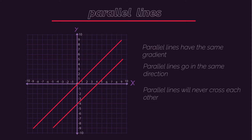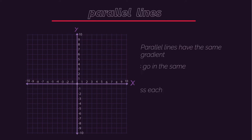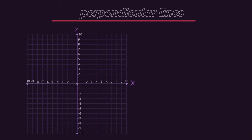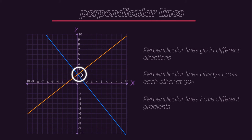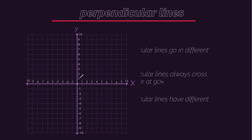So if parallel lines always go in the same direction, perpendicular lines don't. Notice how one goes in this direction, and the other one in this direction. They always cross each other at 90 degrees, which means they don't have the same gradient. They have a different steepness.